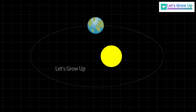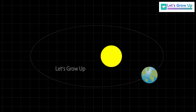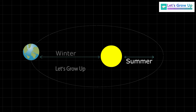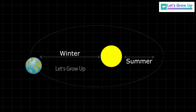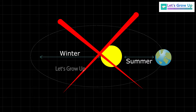Still today, many of us believe that the Earth is closer to the sun in the summer, and in the winter the Earth is farthest from the sun. Although this idea is incorrect, and watch the video to learn it.